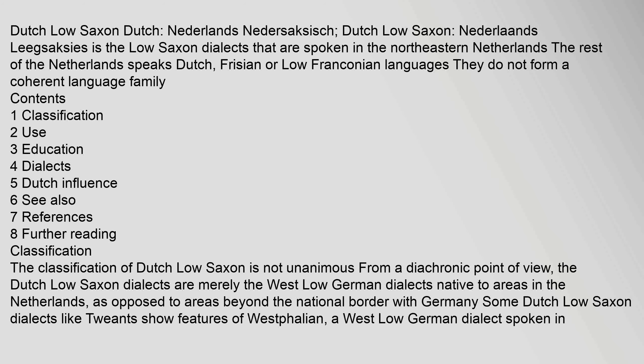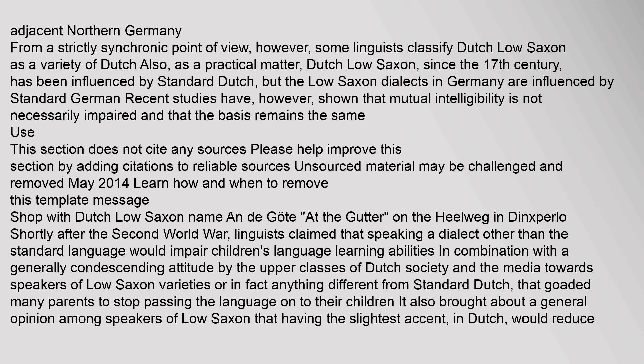The Dutch Low Saxon dialects are merely the West Low German dialects native to areas in the Netherlands, as opposed to areas beyond the national border with Germany. Some Dutch Low Saxon dialects, like Twents, show features of Westphalian, a West Low German dialect spoken in adjacent Northern Germany. From a strictly synchronic point of view, however, some linguists classify Dutch Low Saxon as a variety of Dutch.